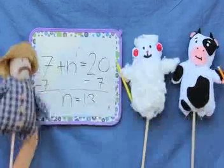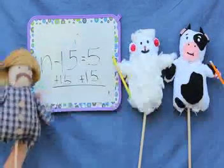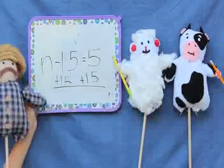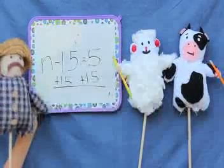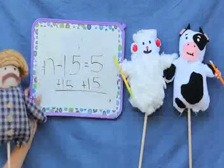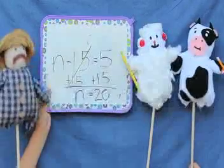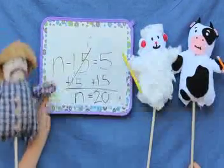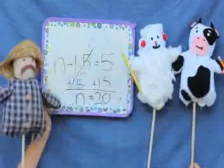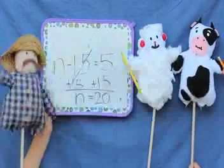Now for the subtraction equations. So as you can see, the first step is to add 15 to itself and then to 5. So now for the last step. The last step was to cancel out 15 and 15 and realize that 15 plus 5 is 20. And that's the answer.